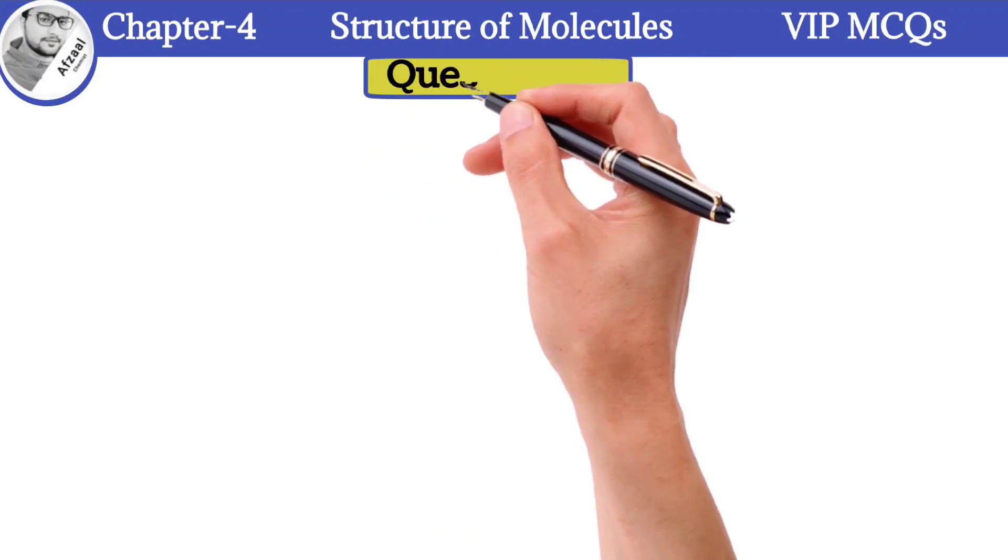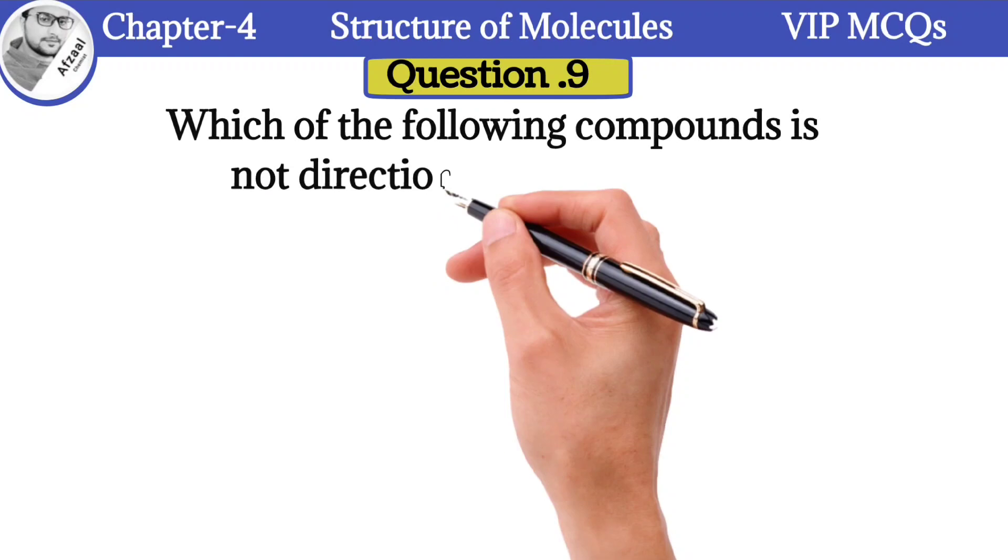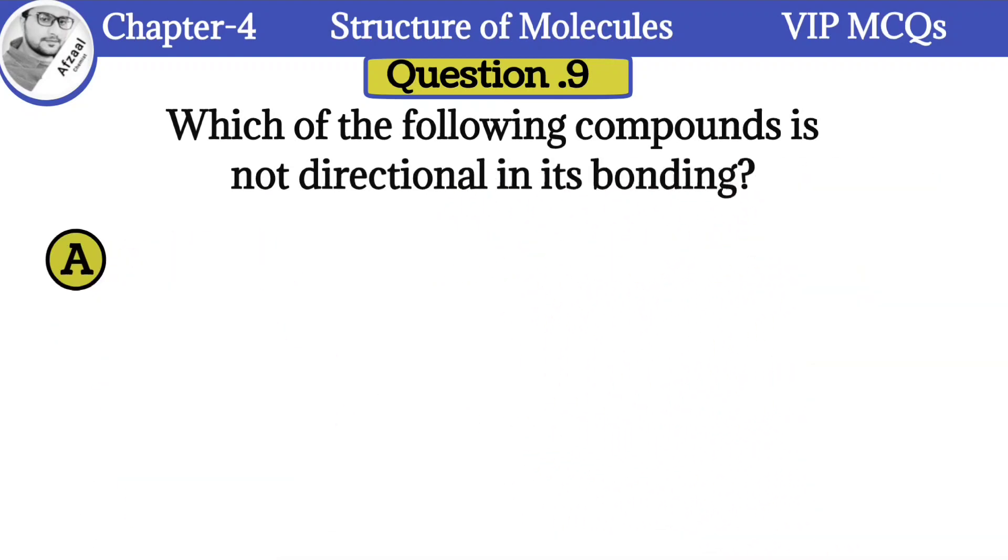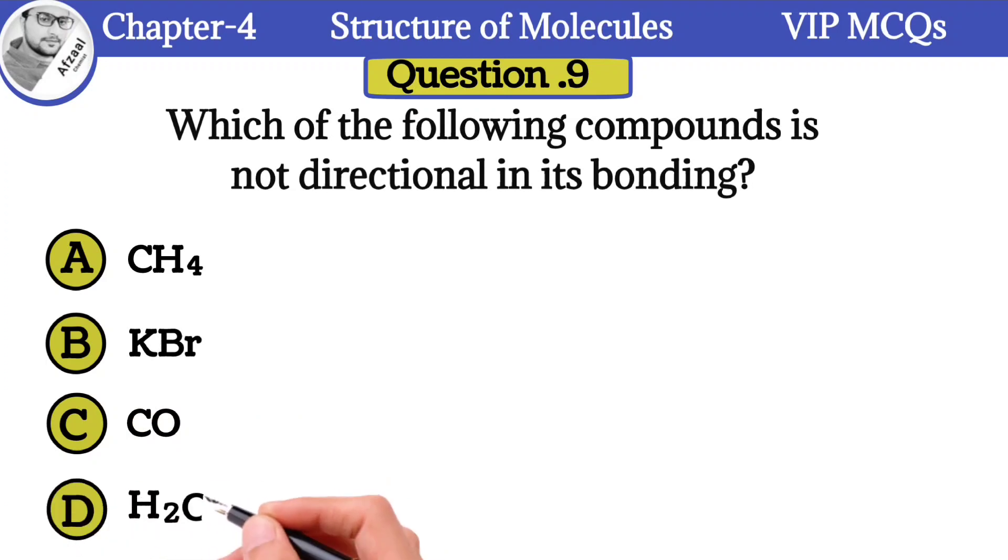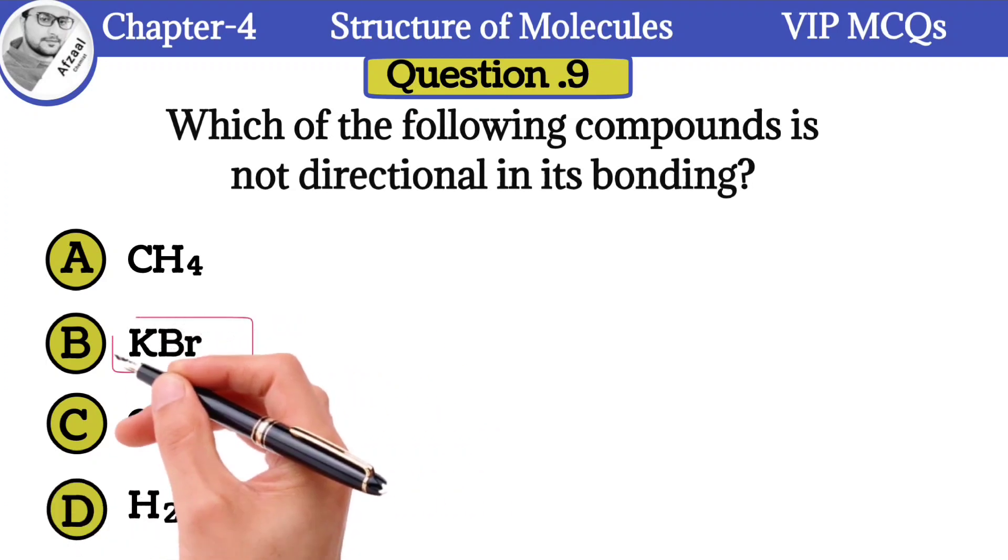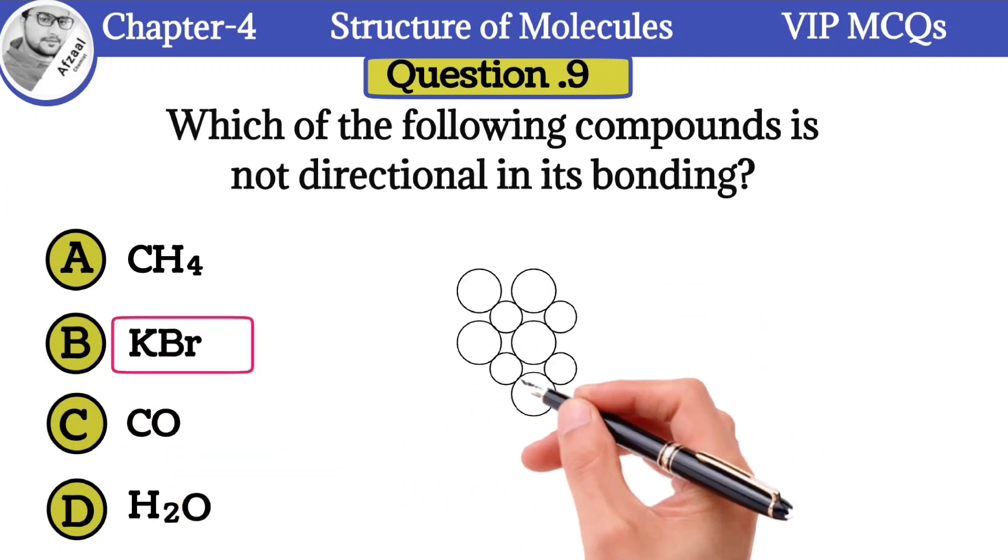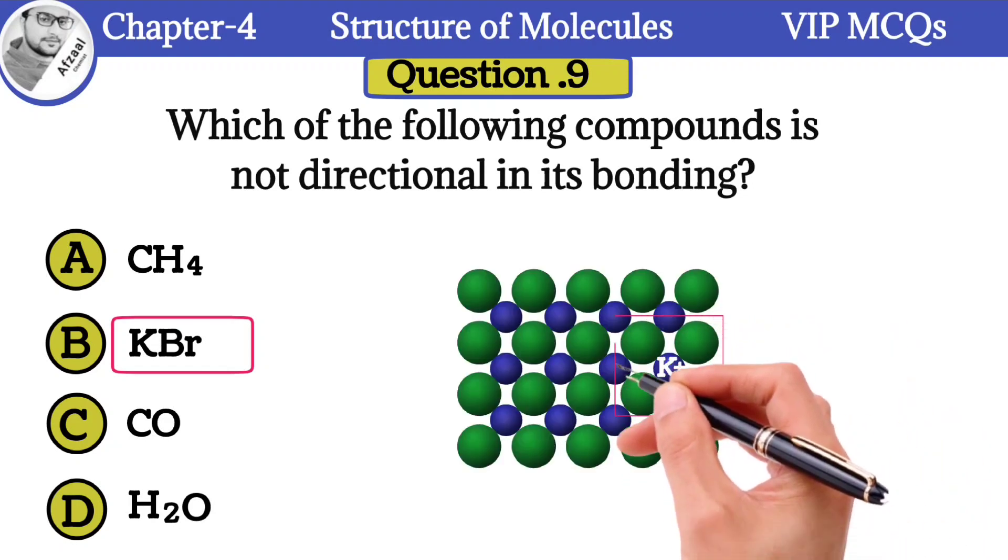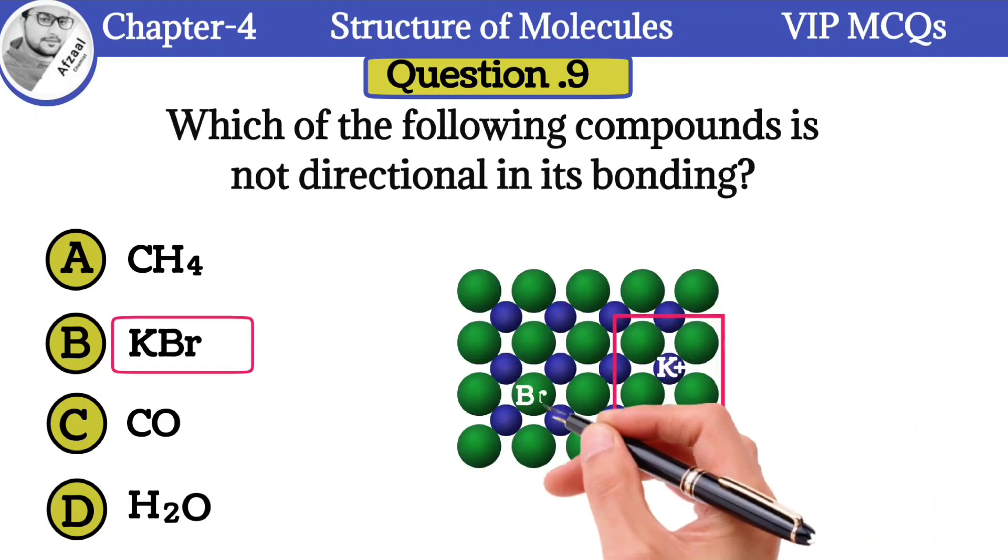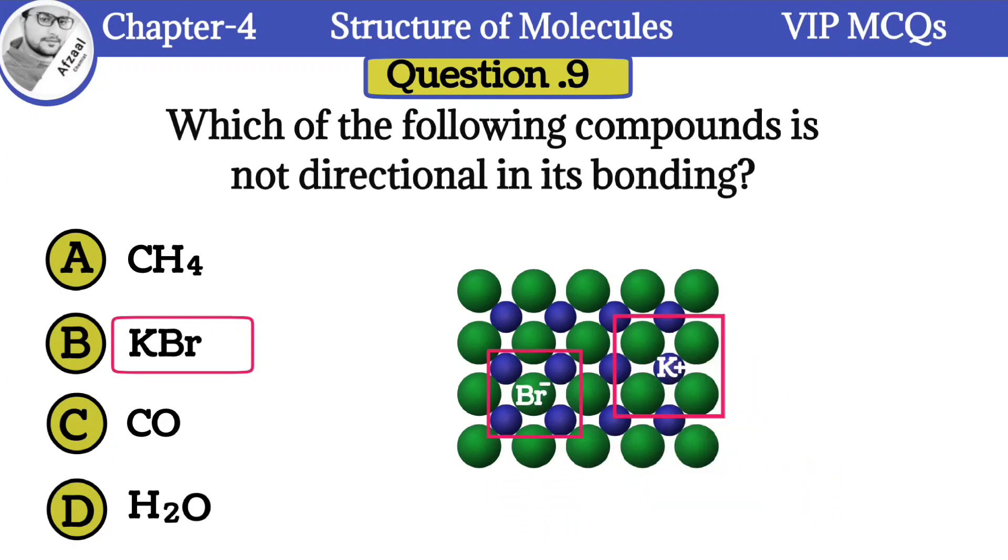Question number 9: Which of the following compound is not directional in its bonding: A) CH4, B) KBr, C) CO, D) H2O. The correct option is KBr, potassium bromide. The non-directional nature of the bond in KBr is because of its ionic bonding, where the attraction between the charged particles occurs in all directions throughout the crystal lattice. That's why the bonding is non-directional.